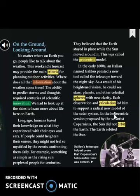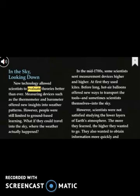Here you can see a photo of Galileo with his telescope, looking at the sky and developing his theories. Now, in the sky looking down, the case is different — people can go up and look down at Earth. New technology allowed scientists to evaluate theories better than ever. Measuring devices such as the thermometer and the barometer offered new insights into weather patterns. However, people were still limited to ground-based learning. What if they could travel into the sky where the weather actually happened?